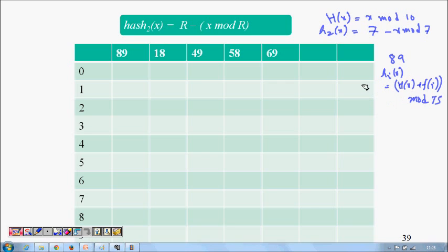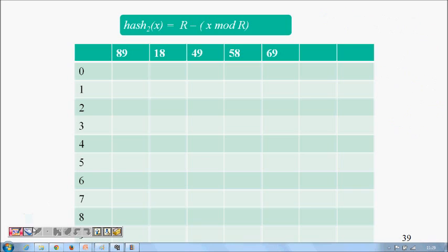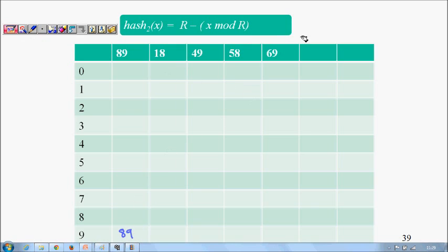If I insert 89, it will be just 89 mod 10, which is 9, so this will come to place 9. Then we want to insert 18. 18 mod 10 is 8, so we will insert 18 here. Now the state is 18 and 89 are here; there is no collision.